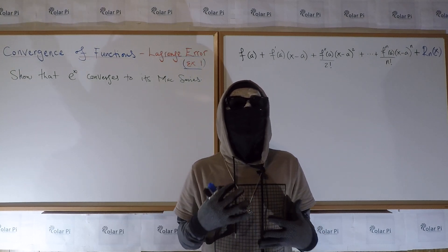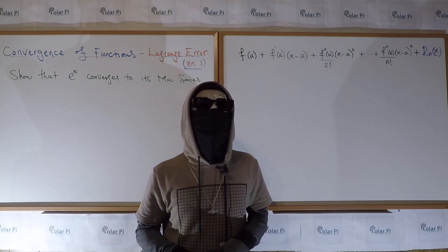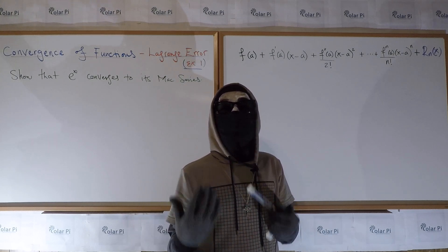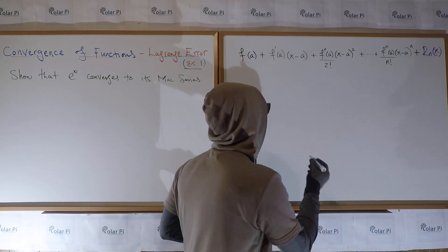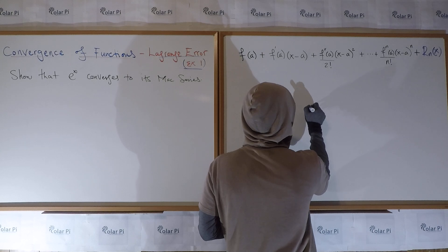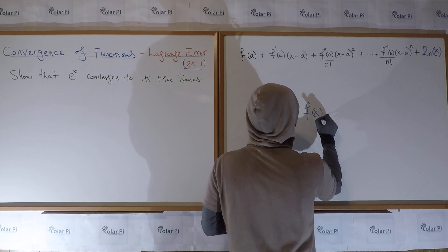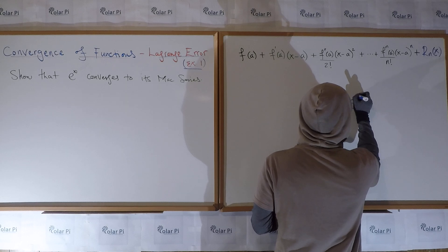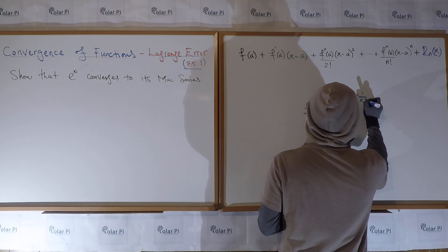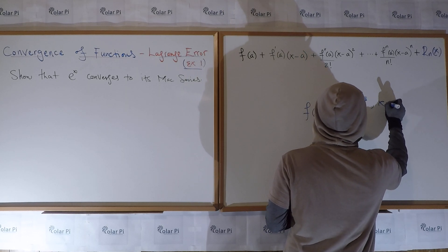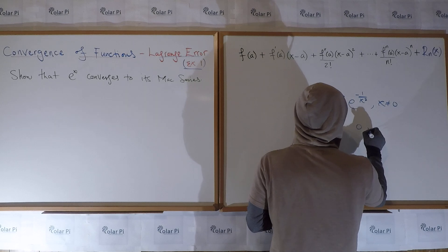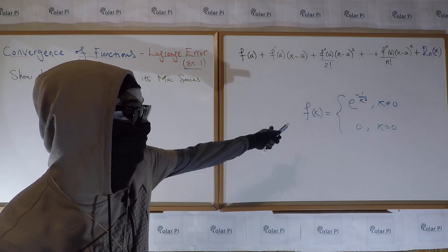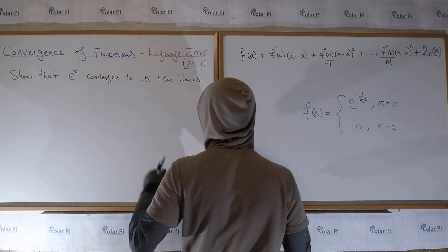Most of the functions we love and are familiar with do converge to their Maclaurin series, but not every function converges. A quintessential example of a function that does not converge to its Maclaurin series is f(x) equals e^(−1/x²) when x ≠ 0, and zero when x = 0.